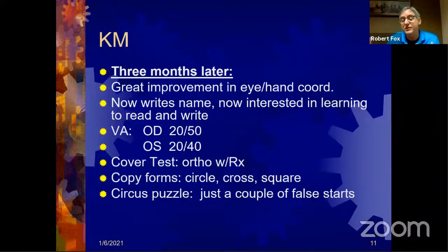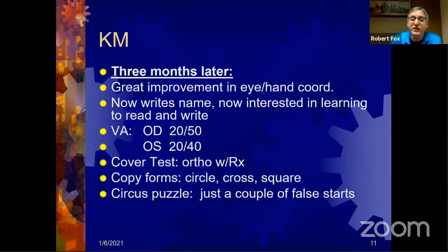So we prescribed the high plus with two base down, said come back in a month, and they came back in three. There were tremendous improvements across the board — hand-eye coordination, she now writes her name (she barely could write a circle before). Now she doesn't mind doing desk work and is showing interest in learning to read and write, which is good because she's starting school in a few months. Her acuity improved greatly — from 20/80 to 20/50 in the right eye and 20/50 to 20/40 in the left. Cover test showed a little less esophoria, and on the copy forms she now did circle, cross, and square, and could do the circus puzzle with just a few false starts.